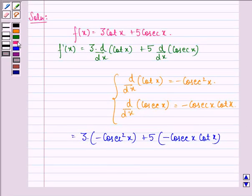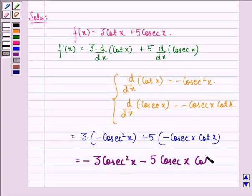This is equal to minus 3 cosecant squared x minus 5 cosecant x cot x.